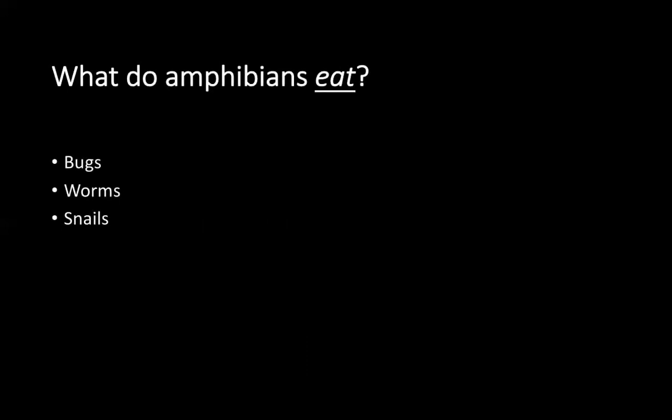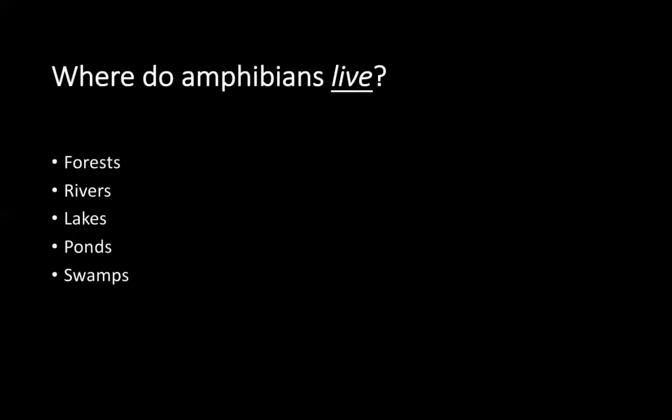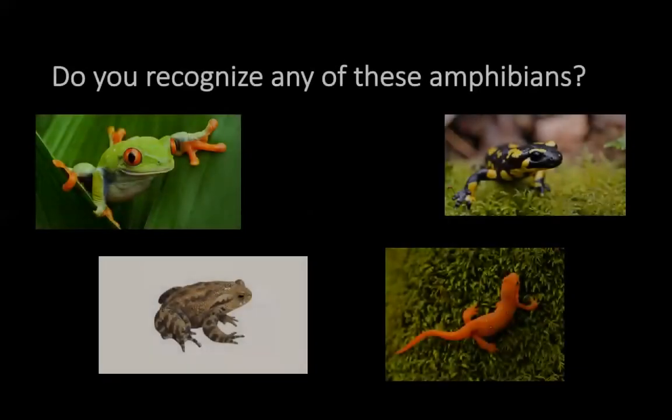What do amphibians eat? Amphibians eat things like bugs, worms, and snails. Where do amphibians live? Amphibians usually live in wet places, like forests, rivers, lakes, ponds, and swamps. Do you recognize any of these amphibians? Some examples are frogs, salamanders, newts, and toads.